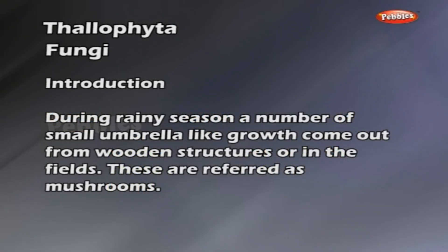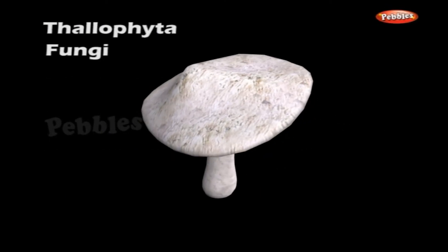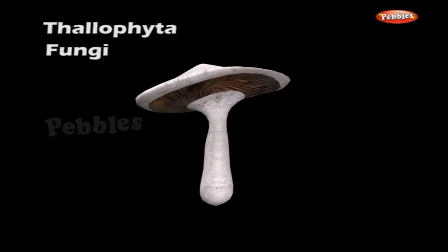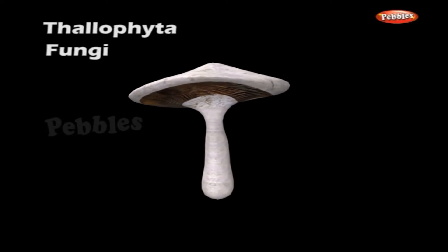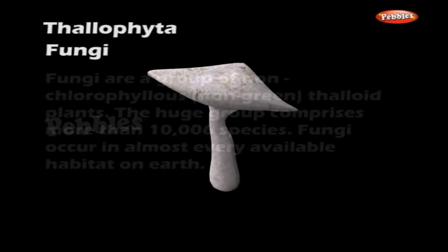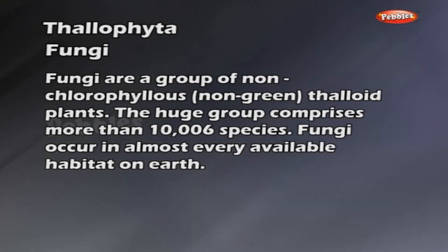Introduction: During the rainy season, a number of small umbrella-like growths come out from wooden structures or in the fields. These are referred to as mushrooms. Also, feather stuffs carry white powdery substances and bread easily gets green or black mold. These are all fungi.